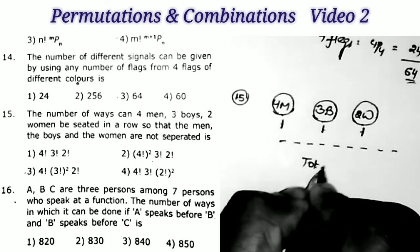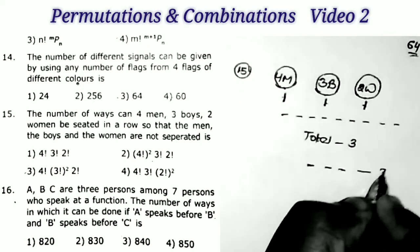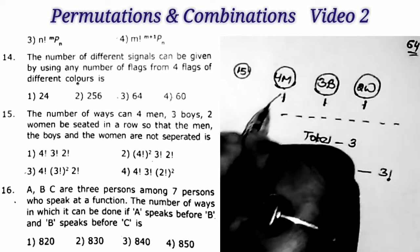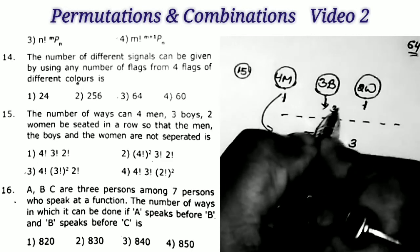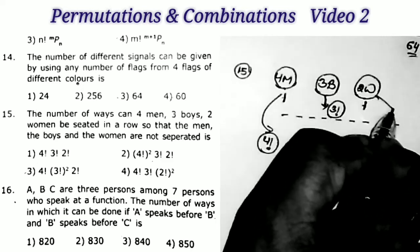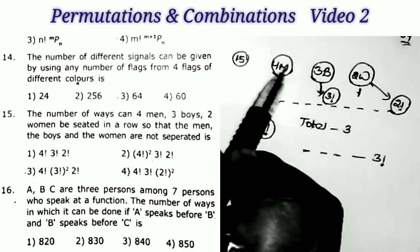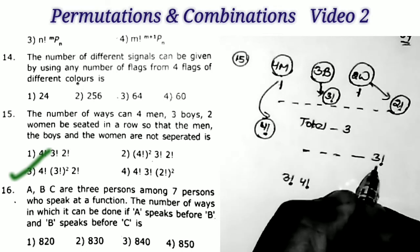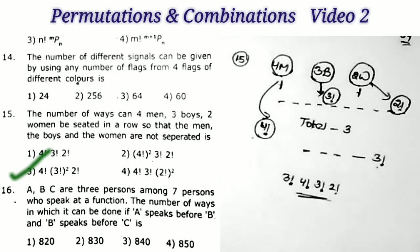Therefore total is equal to three units: one, one, one — total three. We can arrange these three members in three factorial ways. Now the four men can be rearranged among themselves in four factorial ways. The three boys can be rearranged in three factorial ways. The two women can be rearranged in two factorial ways. Therefore the total answer is three factorial into four factorial into three factorial into two factorial. That is the third option.